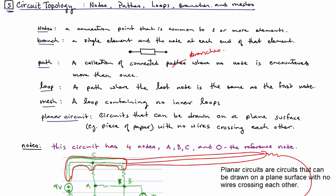We have branches. A single element and the node at each end comprises a branch. A path is a collection of connected branches where no node is encountered more than once. So we could go through this element here and through this element. That's a path.